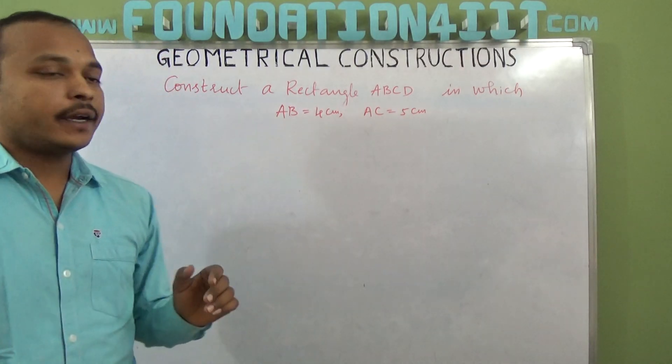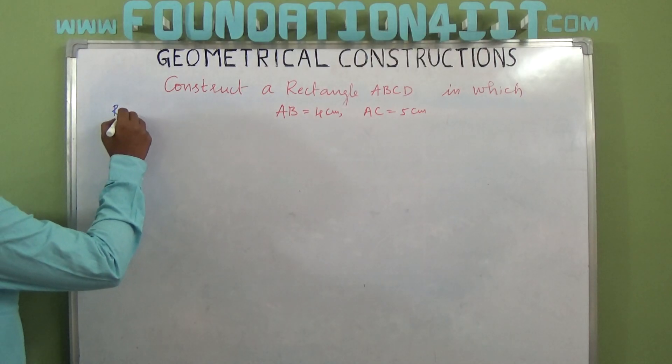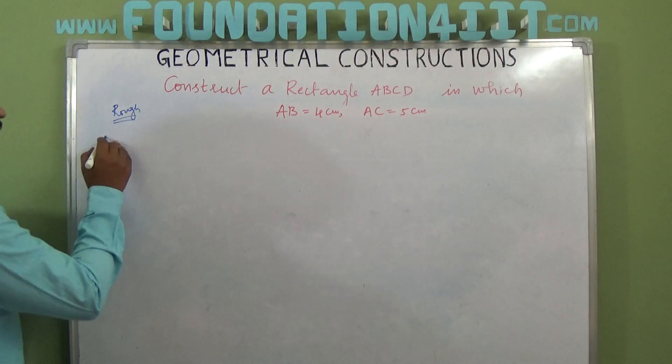Diagonal is 5 and one of the sides is 4 cm. So a rough diagram if you draw and which property we need to use, we will see here.